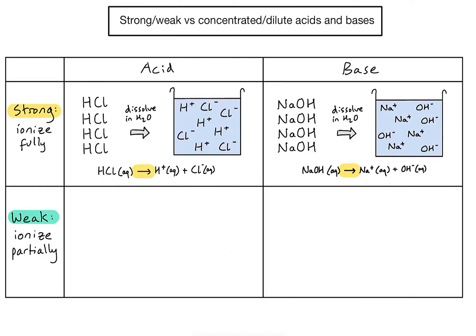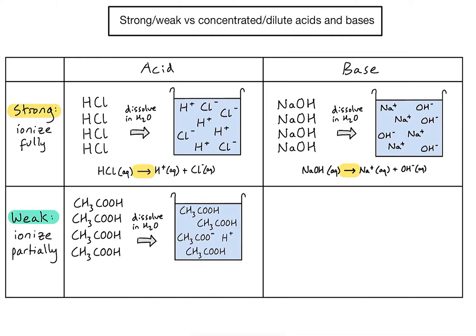Let's take ethanoic acid as an example of a weak acid. With four molecules dissolved in solution, only one of those molecules has ionised. This indicates that ethanoic acid is not very good at ionising. Those two ions might bump into each other and reform ethanoic acid again, and some of the other molecules might dissociate at a later time.